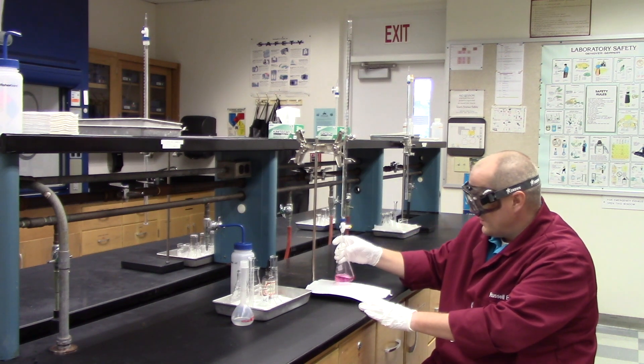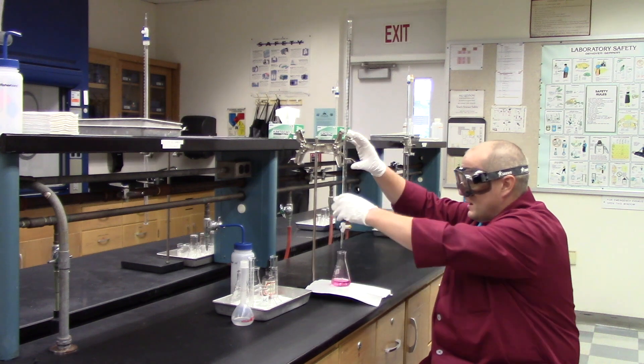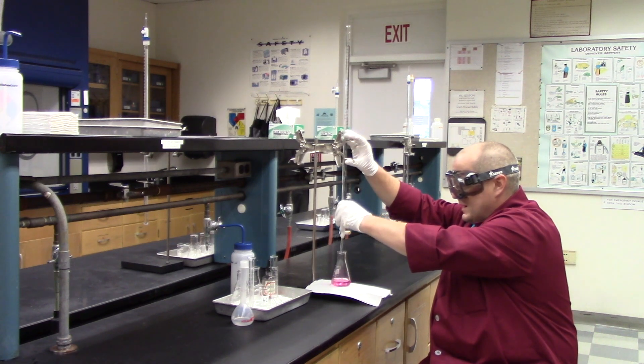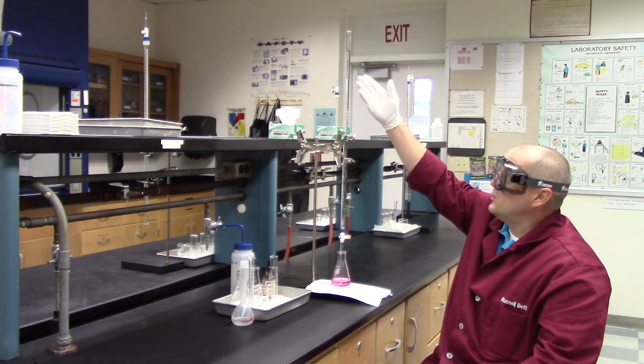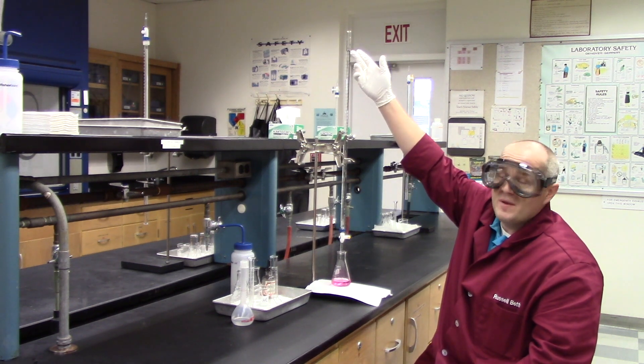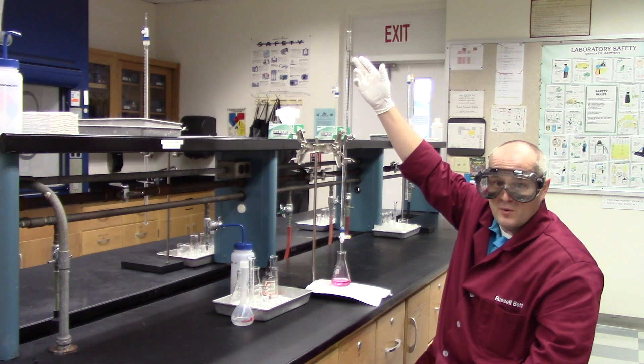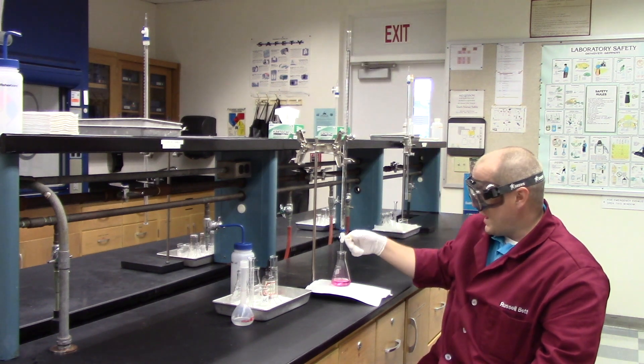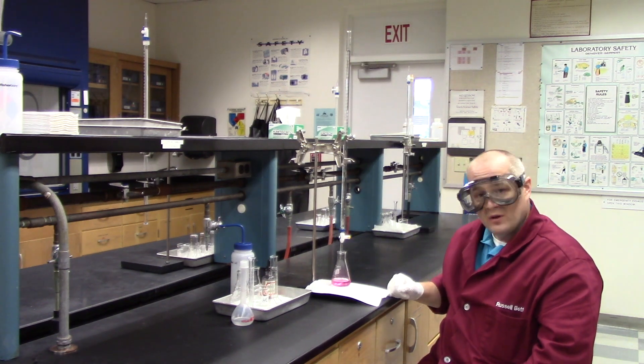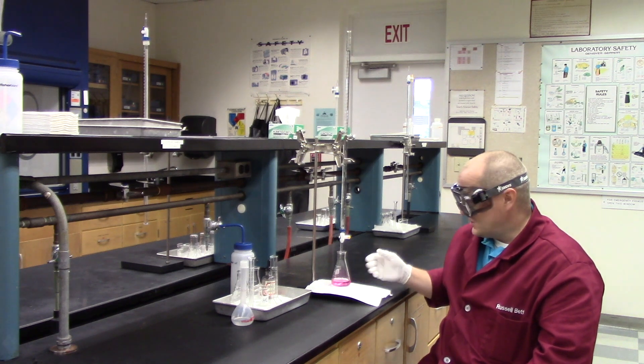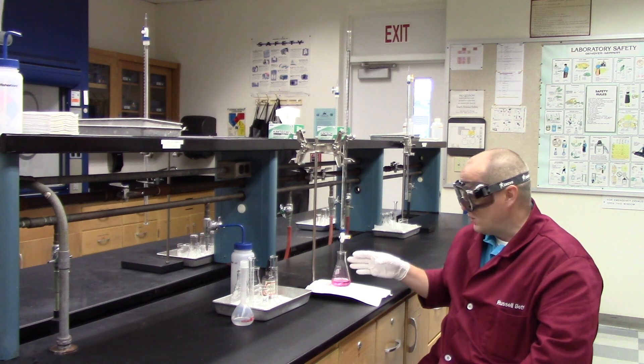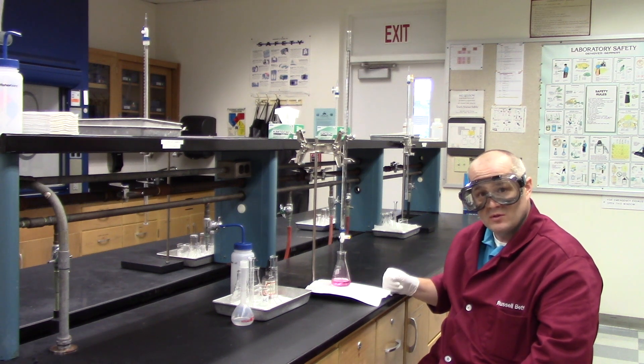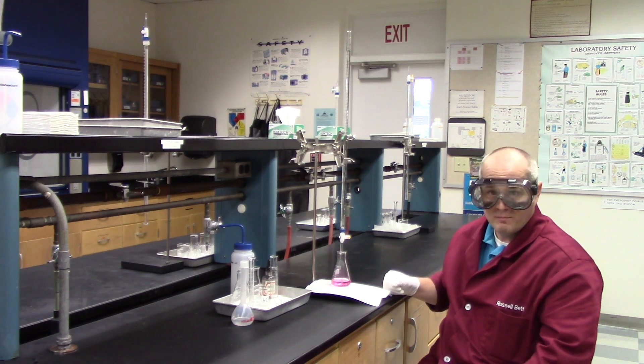Now place this under the burette, adjust the burette so that the tip is inside the flask, so that it minimizes splattering. Make sure you know where your meniscus is in your burette. Better if you start at 0.00. And then we're going to add base to the Erlenmeyer until the color changes to yellow. That will be the equivalence point, or the point at which the moles of acid equal the moles of HCO3 minus, or bicarbonate.